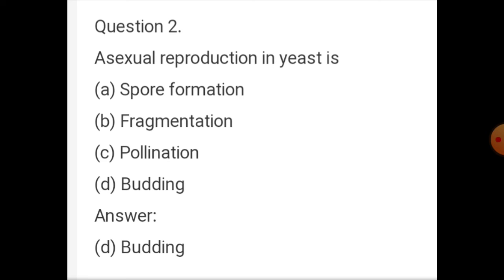Question number two: asexual reproduction in yeast is by — spore formation, fragmentation, pollination, or budding? Pollination is sexual reproduction, so it is eliminated. The correct answer is budding.